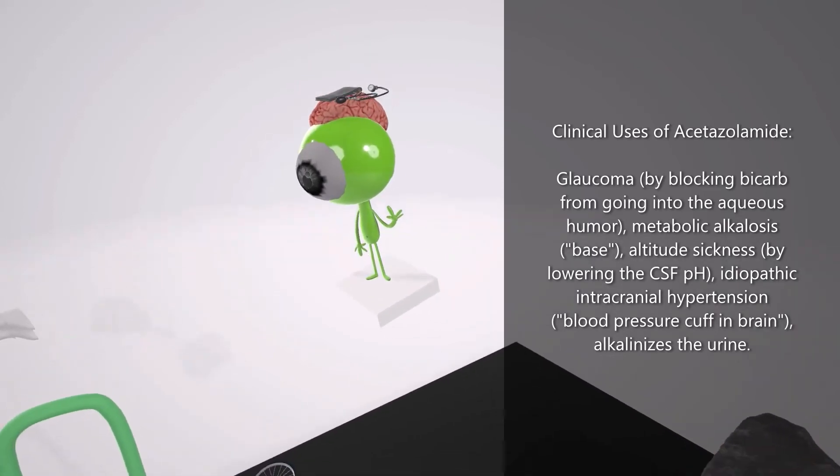This martian has a brain with a blood pressure cuff on it. The brain helps us remember someone's brain, and the blood pressure cuff represents hypertension. Carbonic anhydrase inhibitors are used to treat idiopathic intracranial hypertension. This is because carbonic anhydrase is found in the choroid plexus which produces CSF and helps bicarb into the CSF. So inhibitors will stop this process, thus reducing the intracranial pressure.